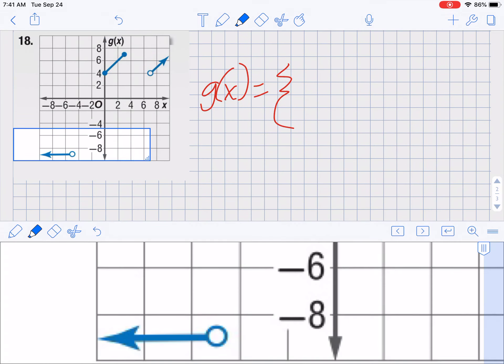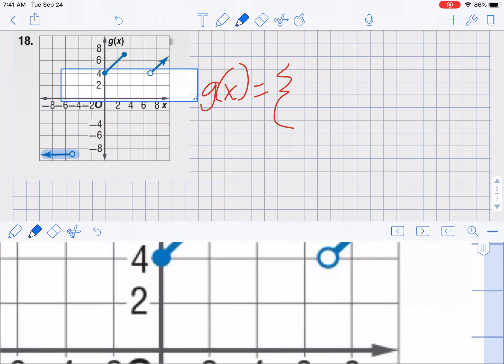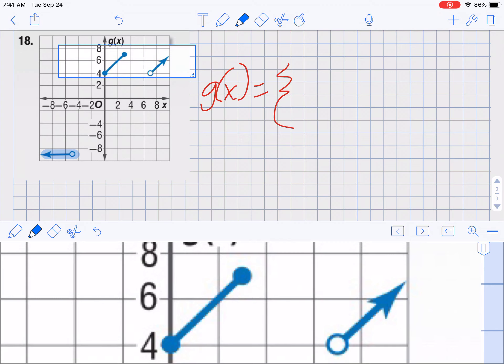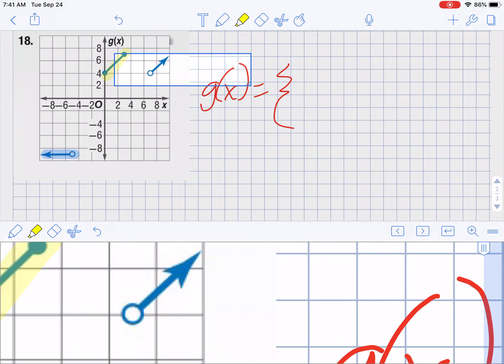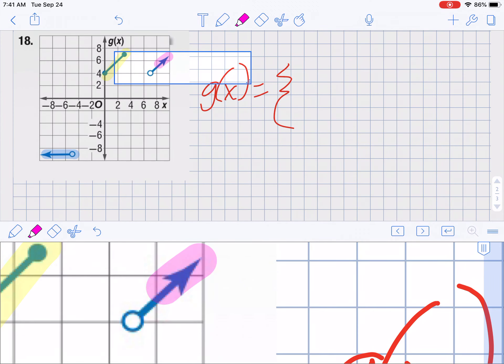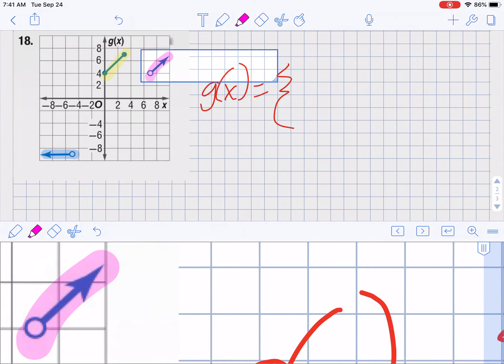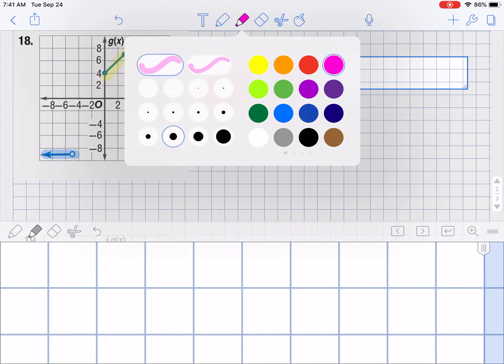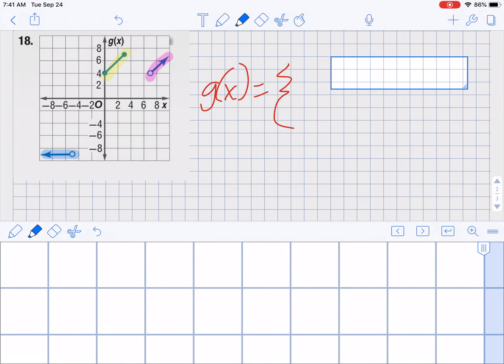So I'm going to highlight each section with a different color, so that way we can distinguish on our equations what goes where. So I'm going to just start over here, and I'm going to put the one to the furthest left.